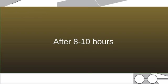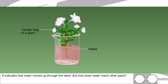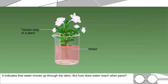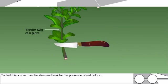After 8 to 10 hours, you observe red colored lines through the stem, leaves, and flowers. It indicates that water moves up through the stem. But how does water reach other parts? To find this, cut across the stem and look for the presence of red color.